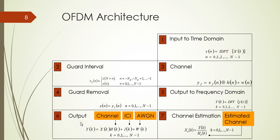And then we have an output, which is the Y here. And finally we can estimate our channel. So in here, the HK is our estimated channel.